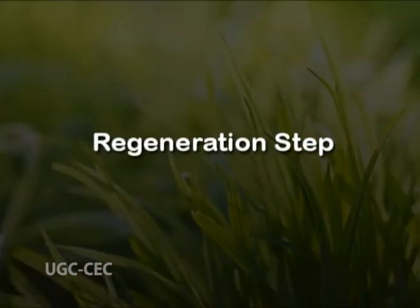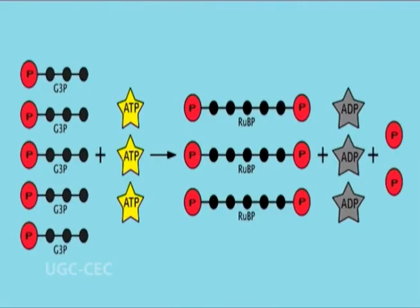In the regeneration step, in order for the Calvin cycle to continue, RuBP must be regenerated.